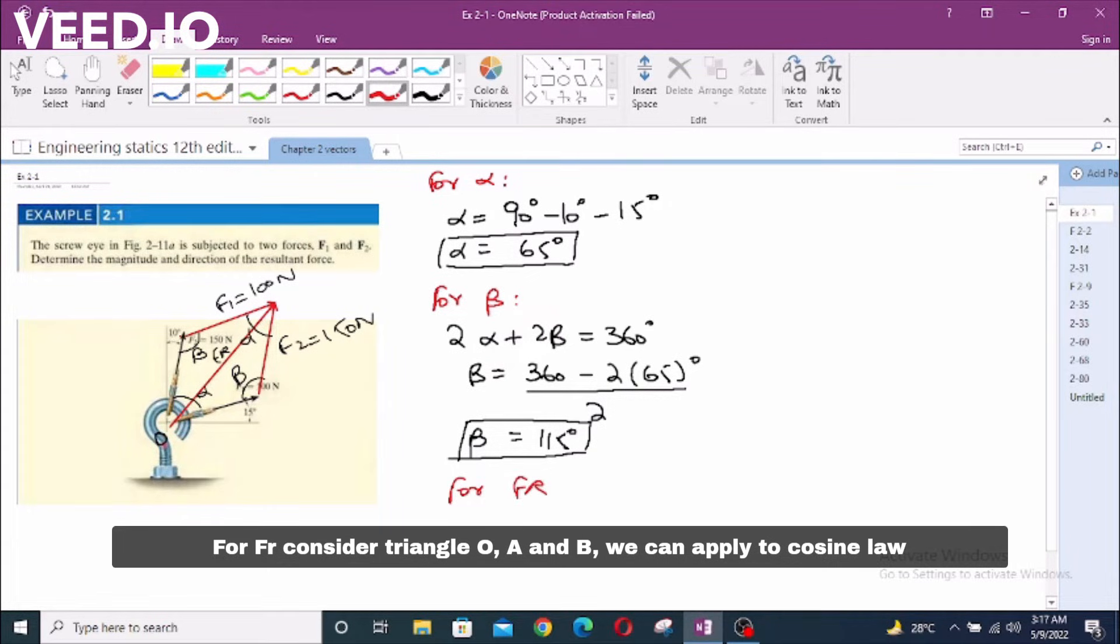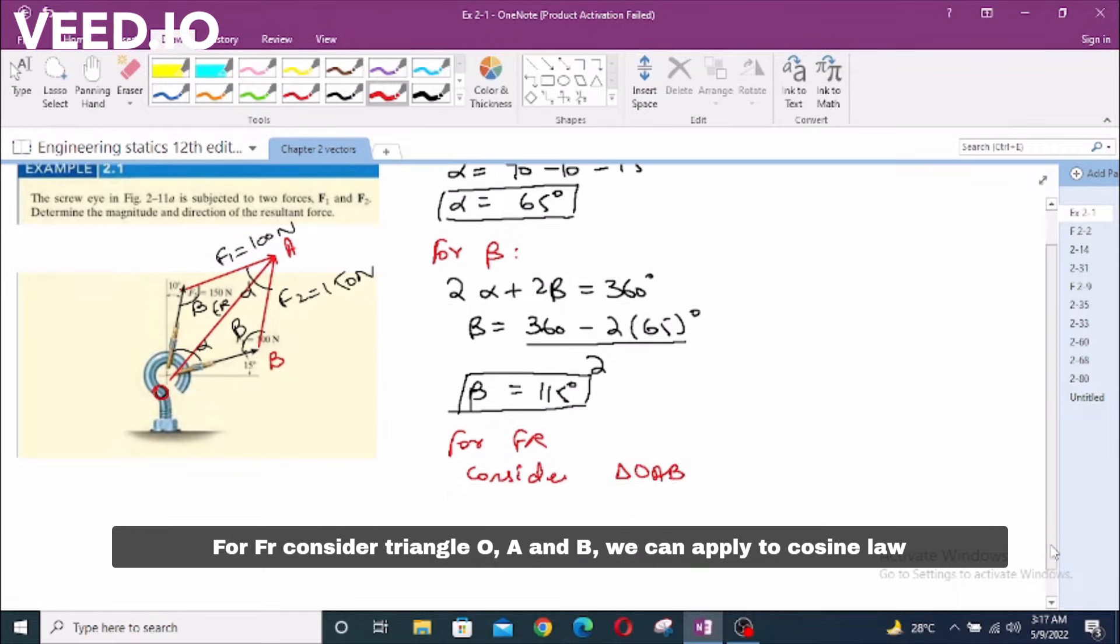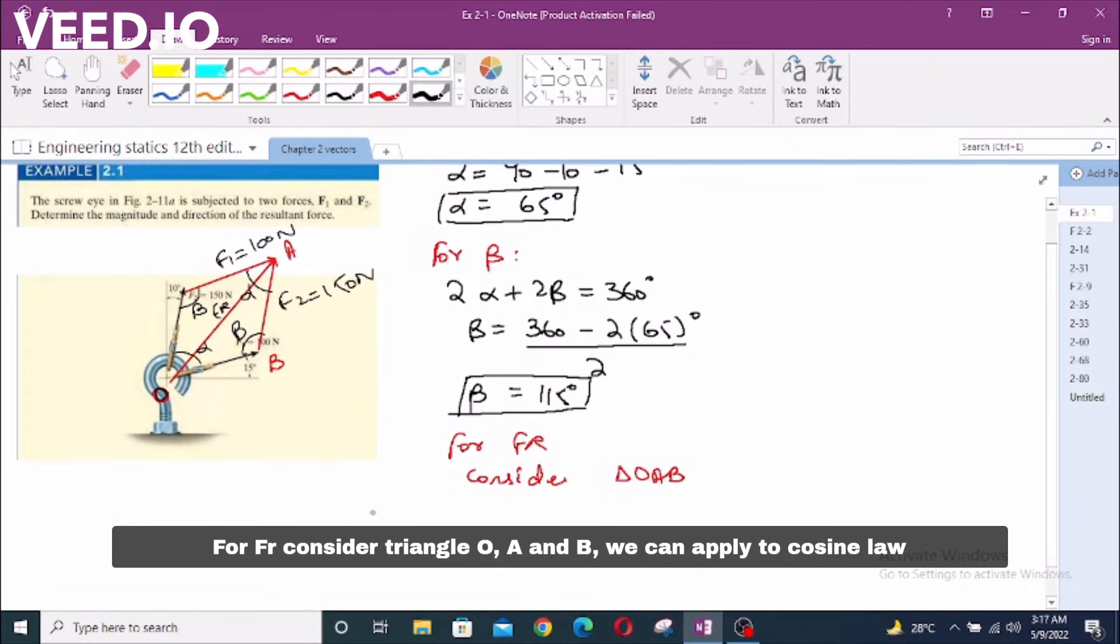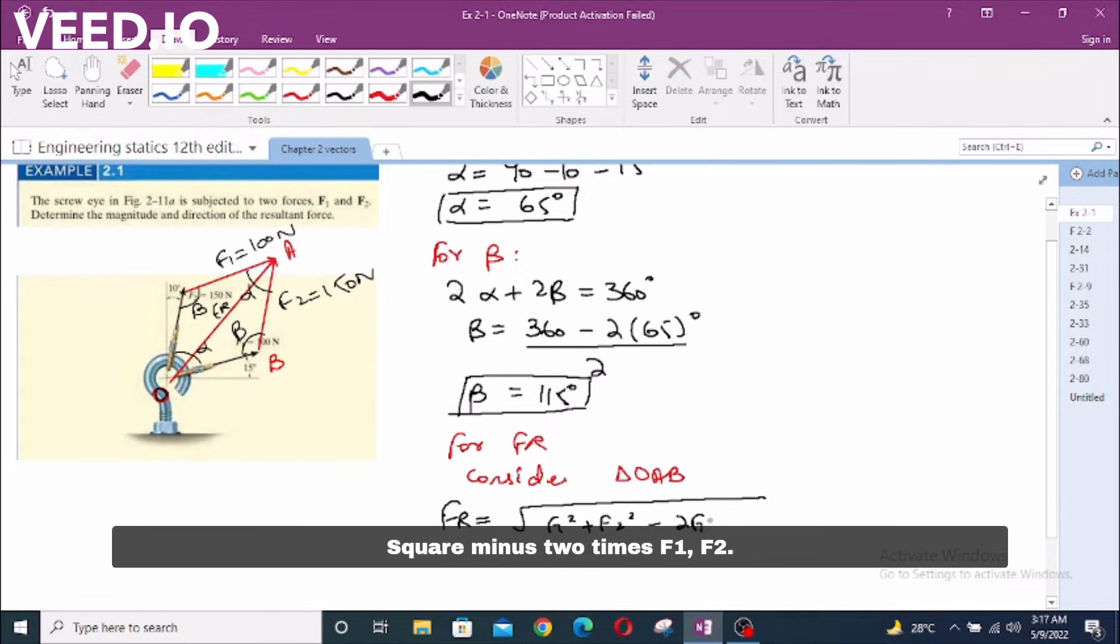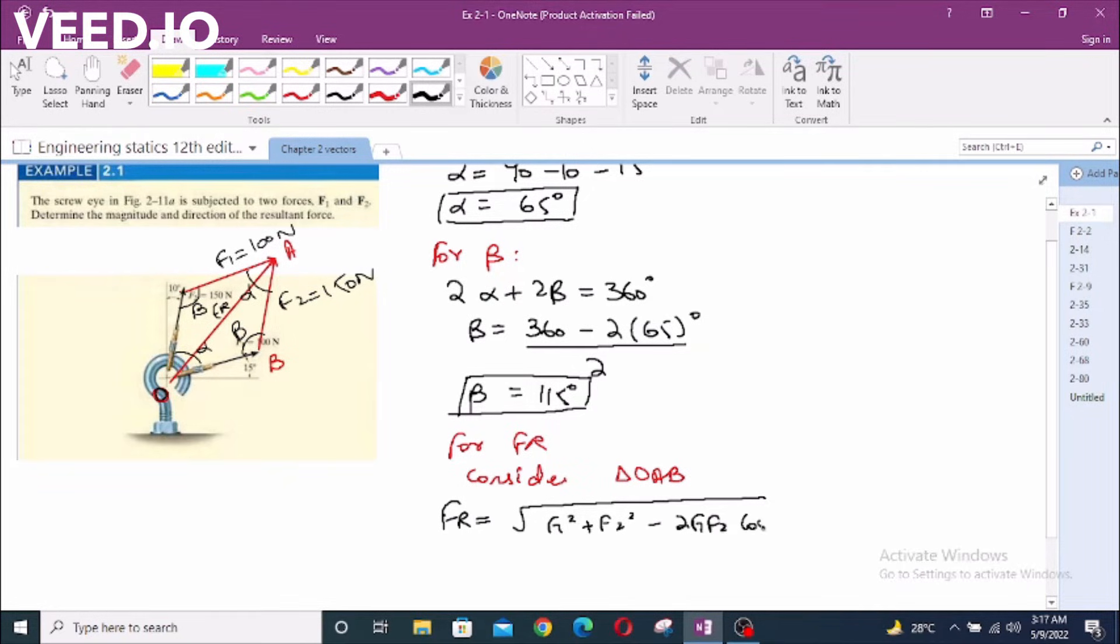Consider triangle O, A, and B. We can apply cosine law opposite to the vertex beta. FR is equal to F1 squared plus F2 squared minus 2 times F1 F2 cos beta.